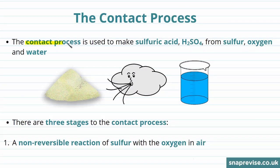The contact process is used industrially in order to make sulfuric acid, or H2SO4. Sulfuric acid is a strong acid that's important in lots of other industrial chemical processes. The contact process makes sulfuric acid from sulfur, oxygen, and water, specifically using oxygen that's found in the air.